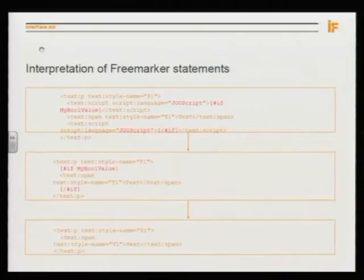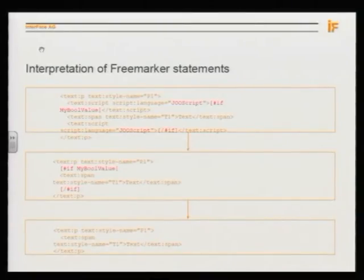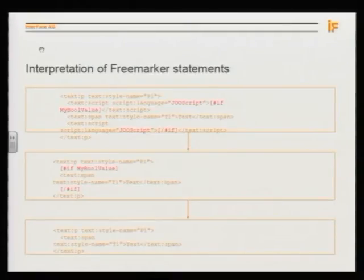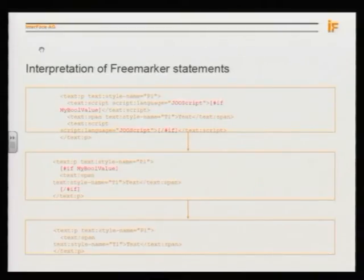If you look inside the ODT file into the XML, you will see something like this: you have a script element with an if and some condition, some text between, and then the end of the if. FreeMarker runs and interprets these expressions, replacing the script elements. At the end, if the condition is true, you get the resulting output.